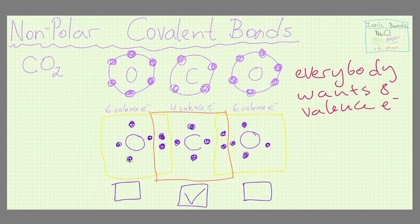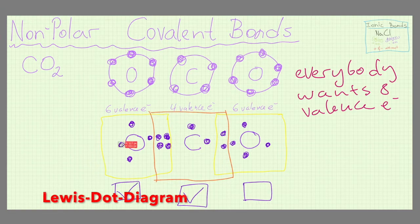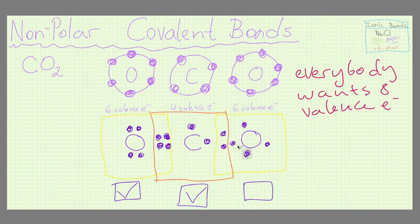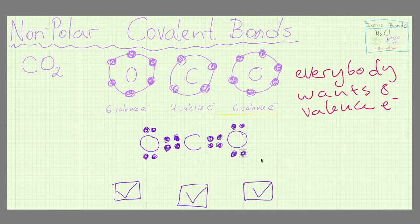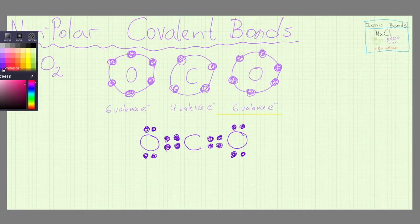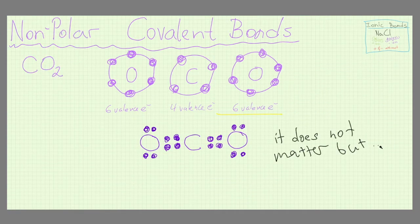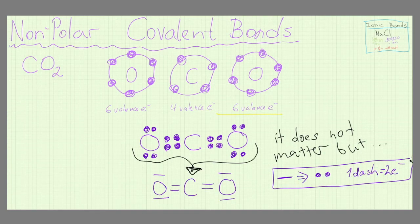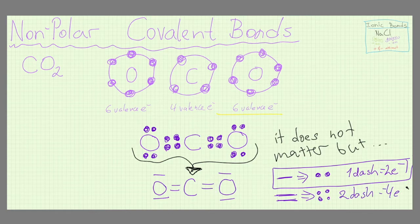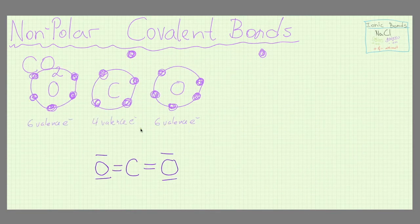Now if we want to redraw this representation of the bond, which is called a Lewis dot diagram, we will replace each pair of electrons with a line. So we will have two lines between each oxygen and carbon, which indicates what we call a double bond. A double bond is when two pairs of electrons are shared and likewise a triple bond occurs when three pairs of electrons are shared and a single bond when only one pair is shared.